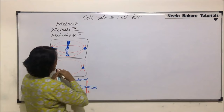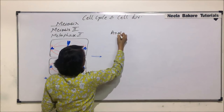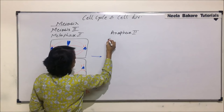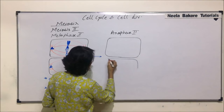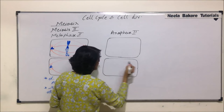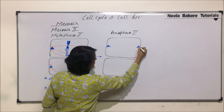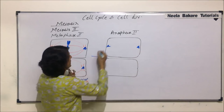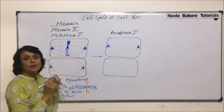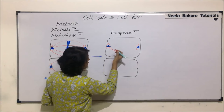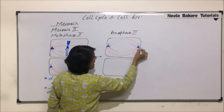Now these two cells get into the next stage, which is anaphase 2. Let us draw these two cells here, both the cells going into anaphase 2 simultaneously. The centriole is here and at the other pole with their aster rays. Now these chromosomal spindle fibers have contracted. This is one chromosomal spindle fiber and this is the other one, and the continuous fibers are as they are.